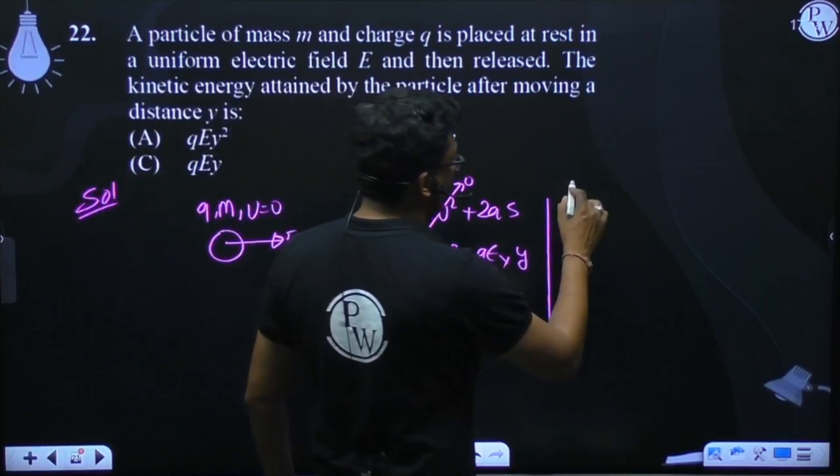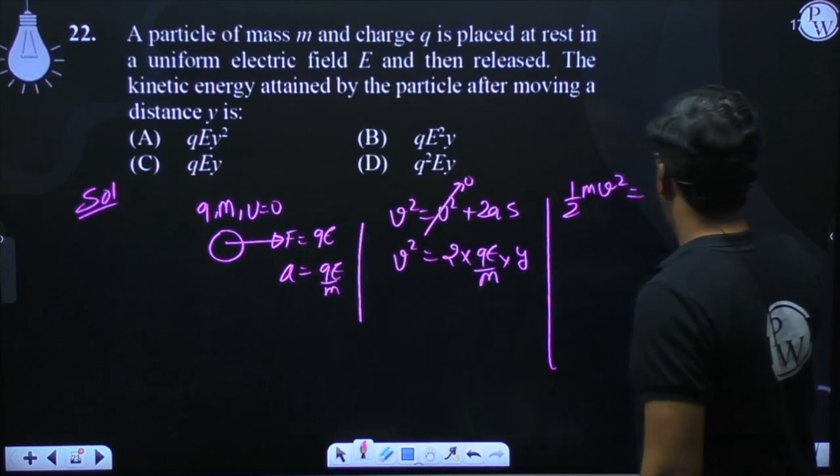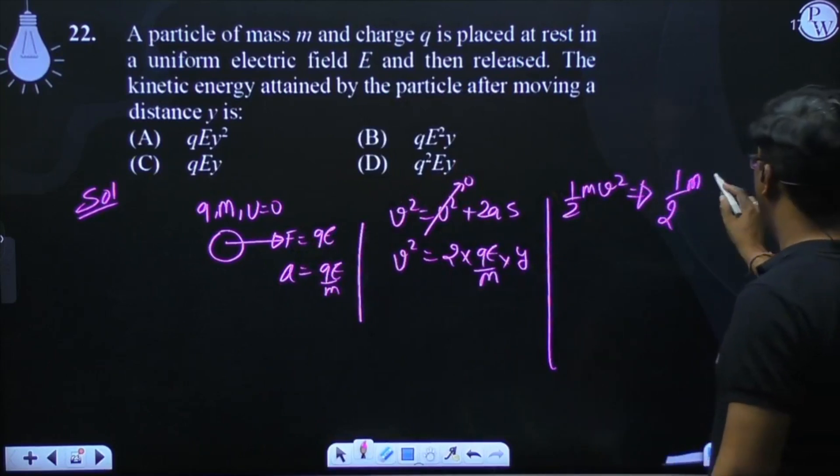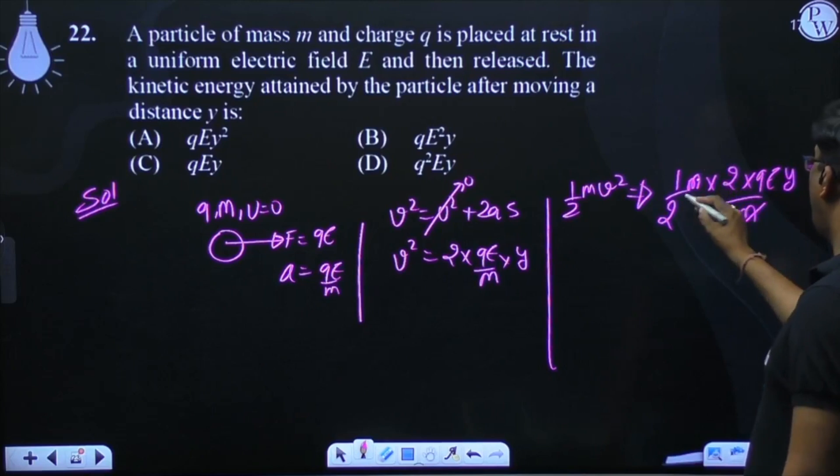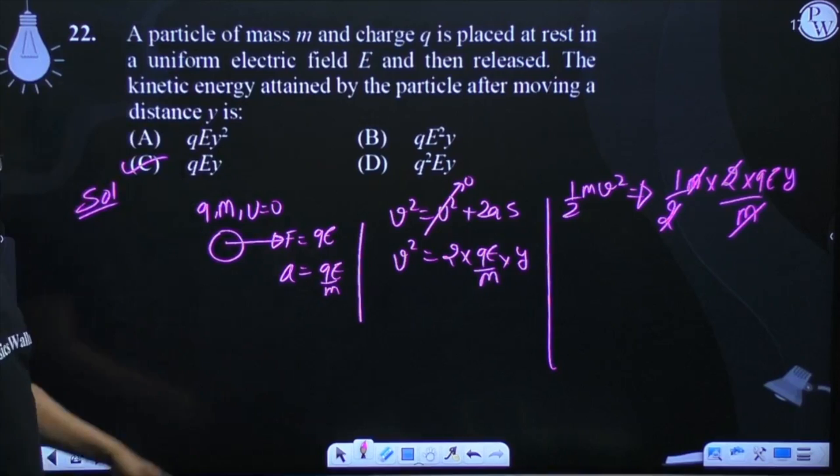And kinetic energy is equal to half M V square. So what do we do? 1 by 2 M into 2 into QE by M, M cancels. So the net kinetic energy will be QEY.